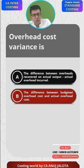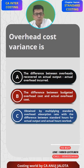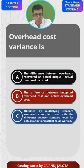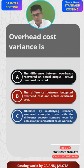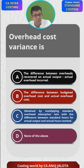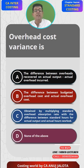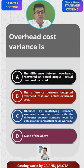Option B: the difference between budgeted overhead cost and actual overhead cost. Option C: obtained by multiplying standard overhead absorption rate — again, absorption rate has come, which is only applicable to fixed overheads — with the difference between standard hours for actual output and actual hours worked. And then lastly option D. Think of the correct answer, and also think about why the wrong answers are wrong and what they represent. Pause the video and comment the correct answer.